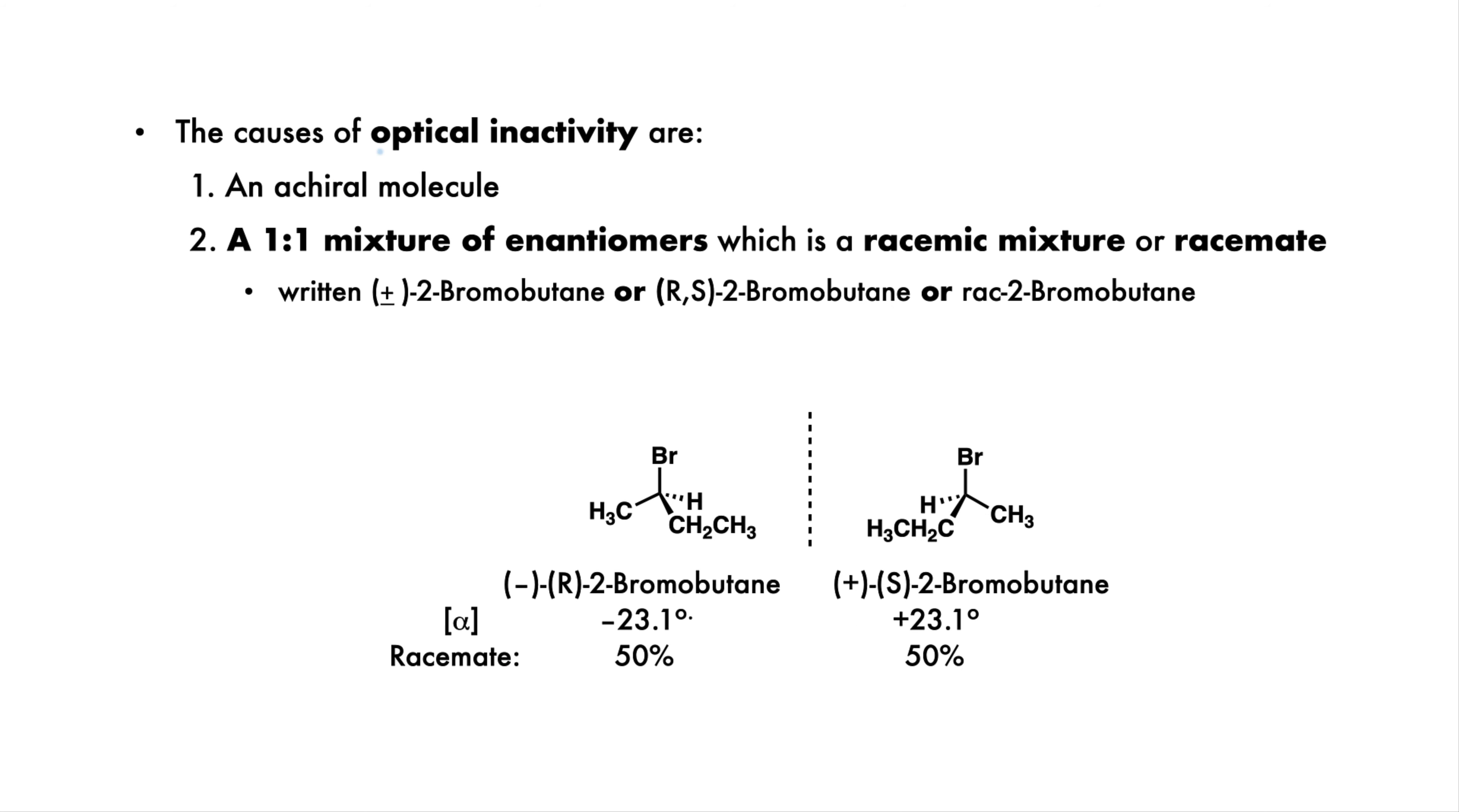The first cause of optical inactivity is an achiral molecule which has no ability to rotate plane polarized light. This is very common. The second cause is if you have an exactly 50-50 mixture of enantiomers. This is called a racemic mixture or a racemate. This is also a common situation, and we'll discuss why it occurs in the last section.